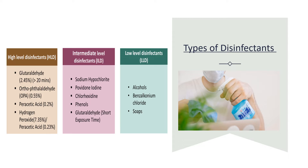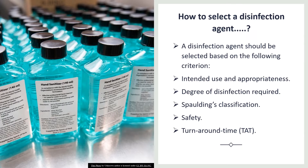High-level disinfection examples include glutaraldehyde, peracetic acid, and hydrogen peroxide. Intermediate-level disinfectants include sodium hypochlorite, iodine, and chlorhexidine. Low-level disinfectants include alcohols and quaternary ammonium chlorides. When selecting a disinfectant agent, it should be selected based on intended use, the degree of disinfection required, the Spaulding classification of the instrument, and safety considerations.